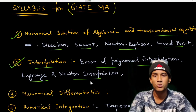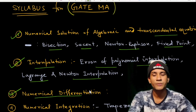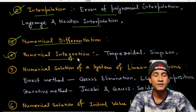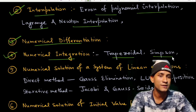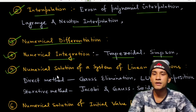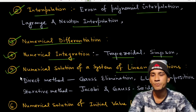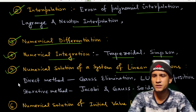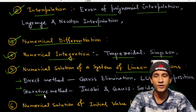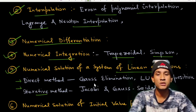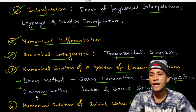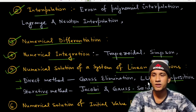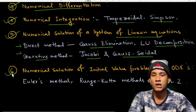Newton interpolation includes forward interpolation, backward interpolation, and so on. Chapter three is numerical differentiation. Chapter four is numerical integration, which covers the trapezoidal rule, Simpson's one-third rule, and three-eighths rule. Chapter five is numerical solution of a system of linear equations, with two types of methods: direct methods and iterative methods. Direct methods include Gauss elimination and LU decomposition, while iterative methods include the Jacobi iteration method and Gauss-Seidel method.